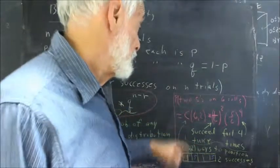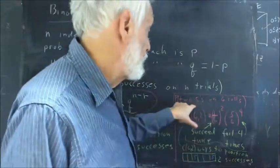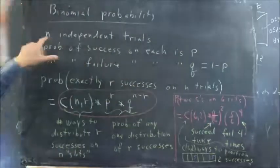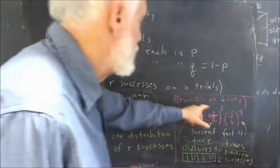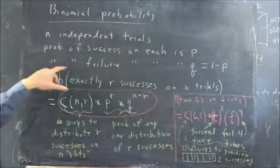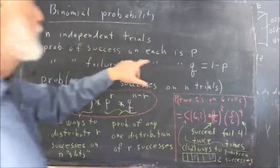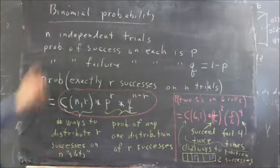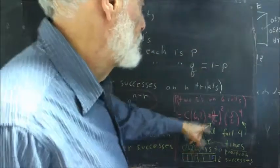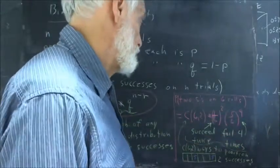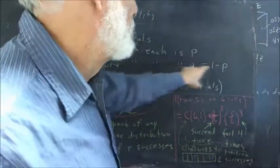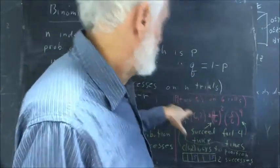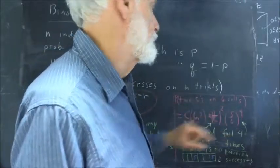The result is two fives on six rolls. The six rolls are six trials, so n would be six. The two fives, that's the number of successes, so the number of successes is r, exactly r successes on the n trials. The probability of success on any trial is one-sixth. The probability of a failure is one minus one-sixth, which is five-sixths. And of course, you're going to fail four times if you get exactly two successes on six trials.